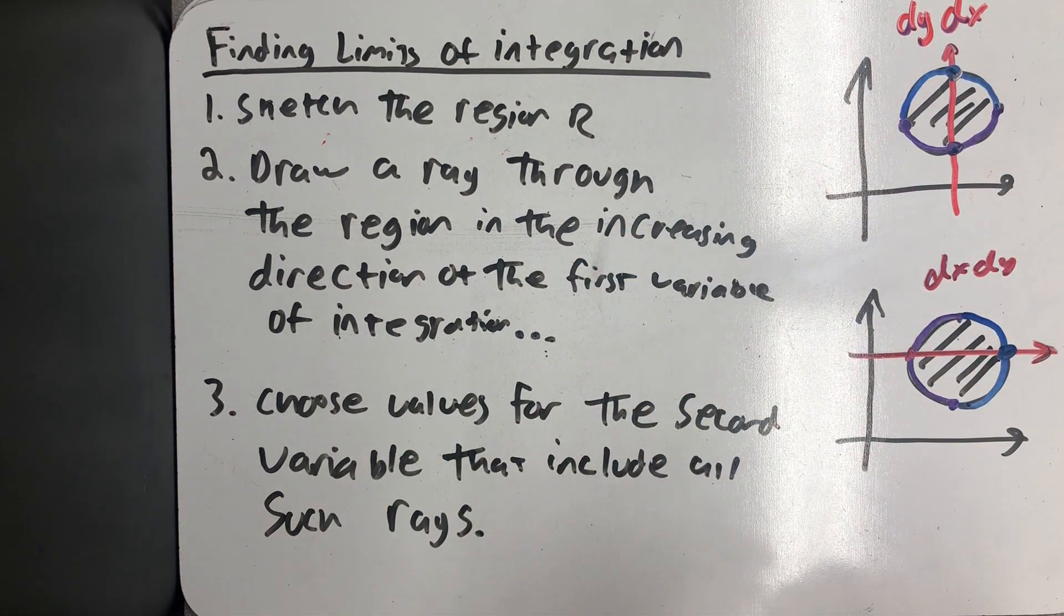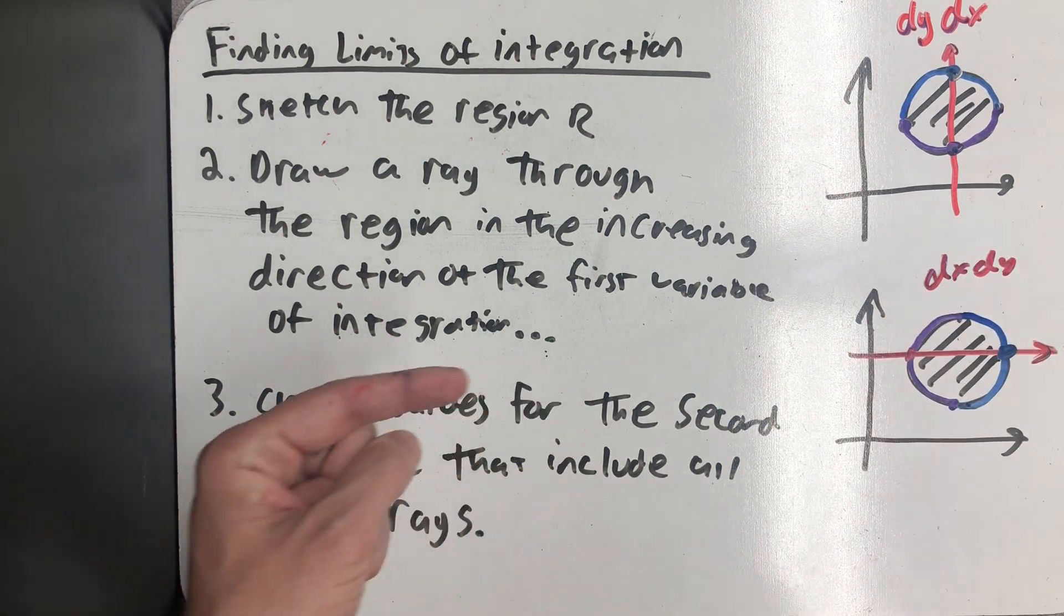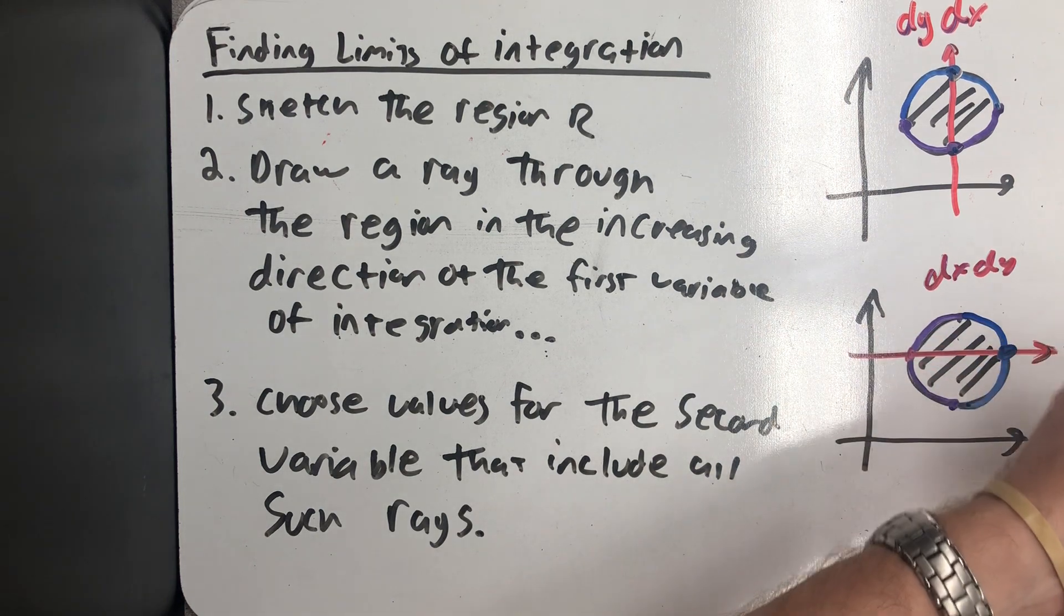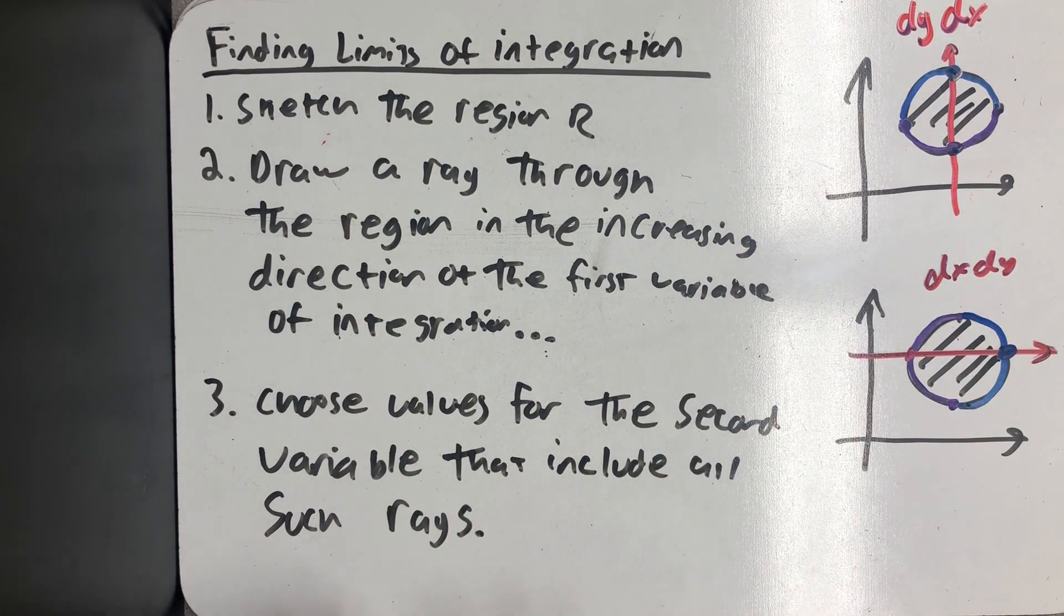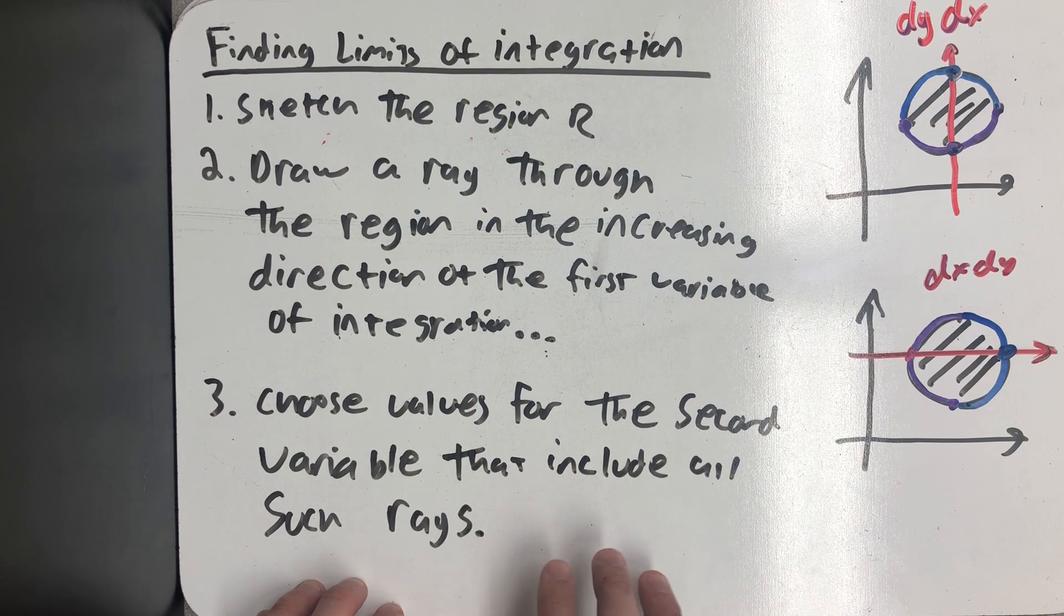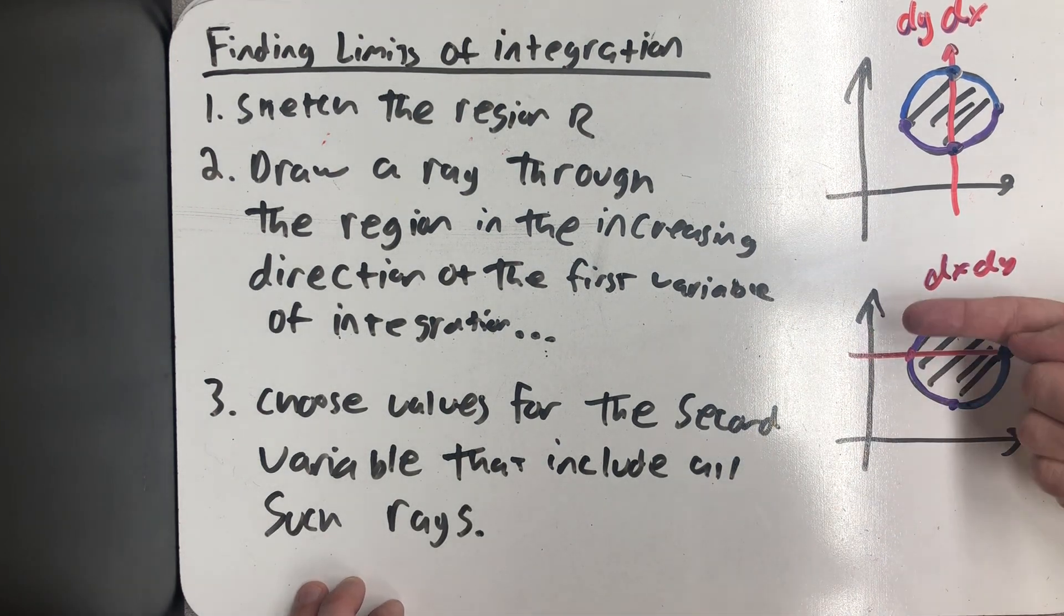If I integrate with respect to x first, I need to think about a left function and a right function. But I still draw a ray in increasing direction of x, and I enter and exit the region. I pick my bounds for the second variable based on values that would include the whole region.